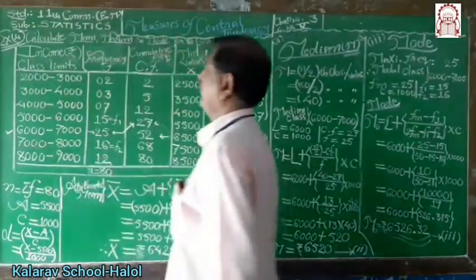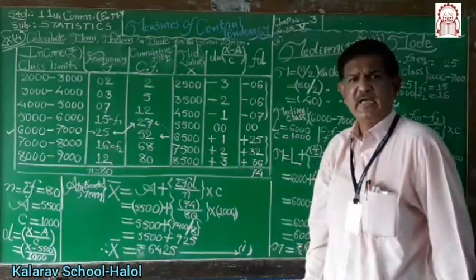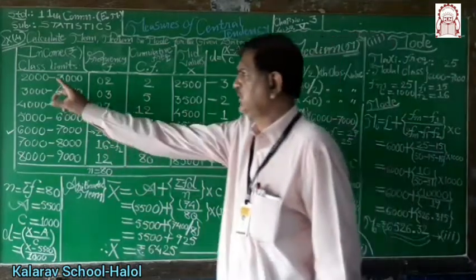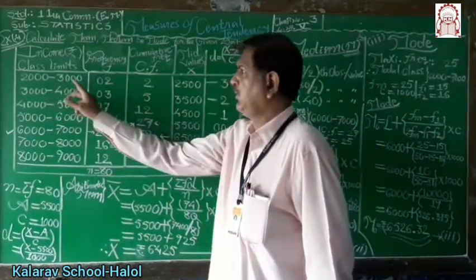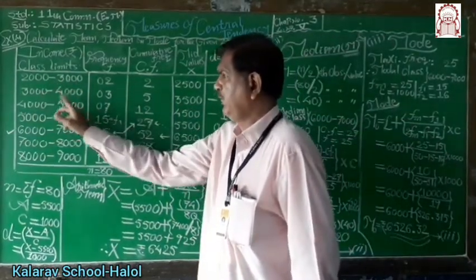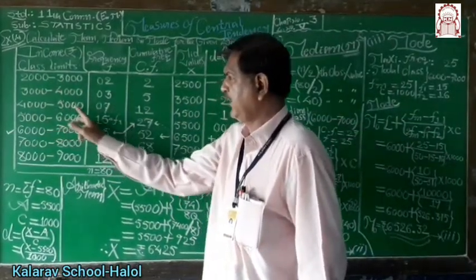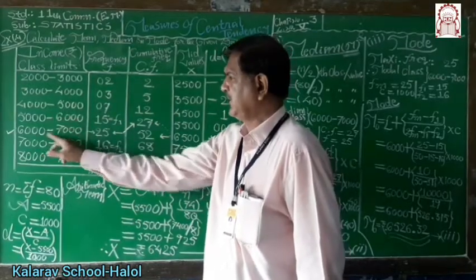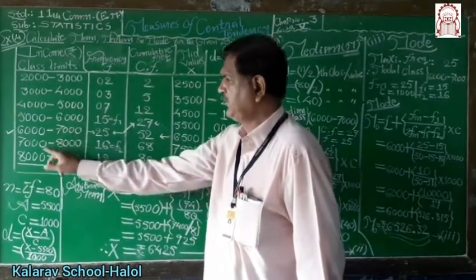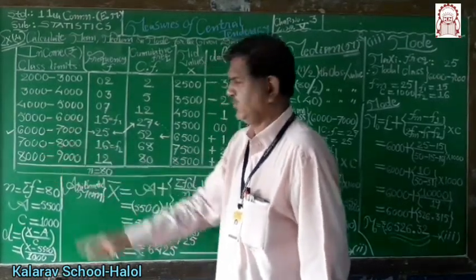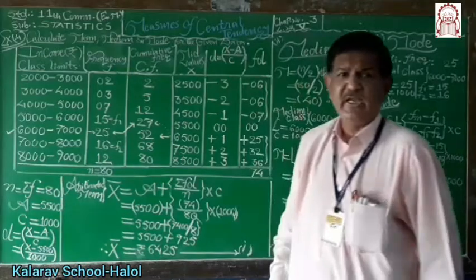The classes are income groups: 2000 to 3000, 3000 to 4000, 4000 to 5000, 5000 to 6000, 6000 to 7000, 7000 to 8000, and 8000 to 9000.